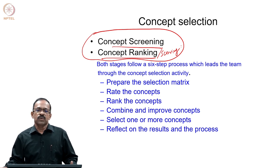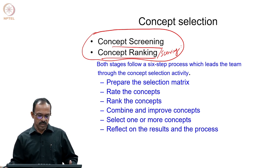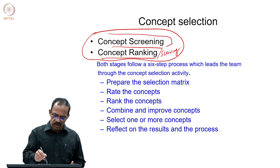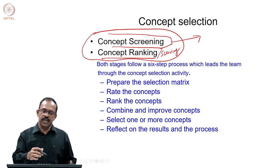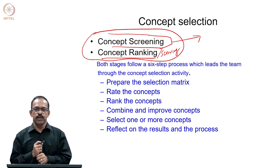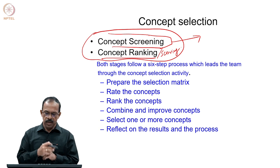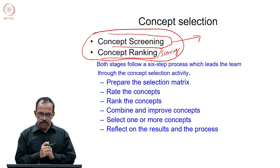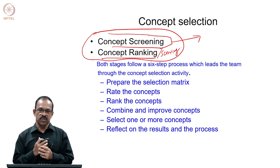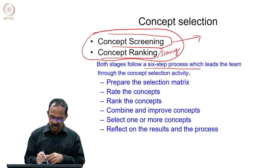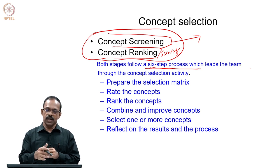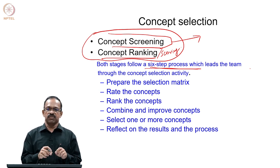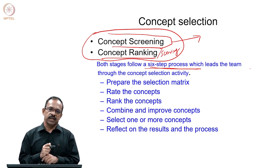In both stages, the purpose is to get the best out of the set of alternatives available. In concept screening, we try to bring down the large number to a smaller number. In concept ranking or concept scoring, we do a more objective evaluation of the alternatives to get the best — that is concept ranking or concept scoring. In both stages, the steps involved are almost the same. We have a six-step process which leads the team to the concept selection activity. Whether screening or ranking, we do the same stages, except some stages handle the ranking process differently.